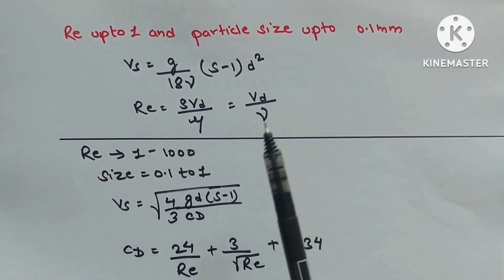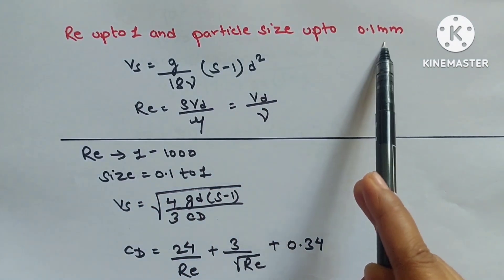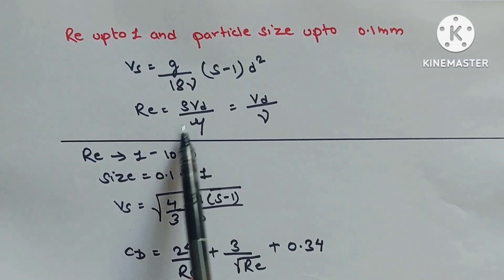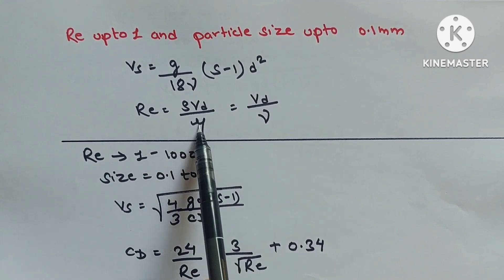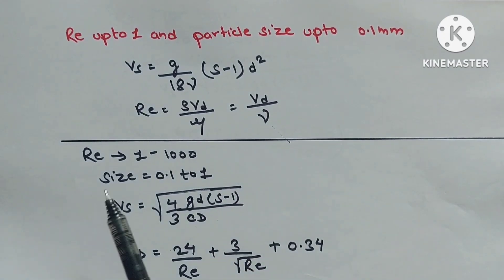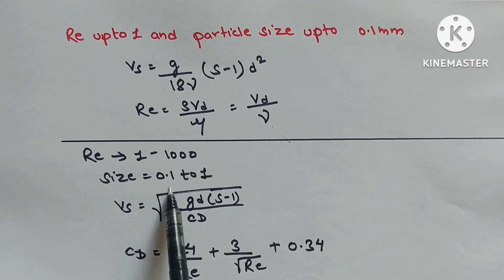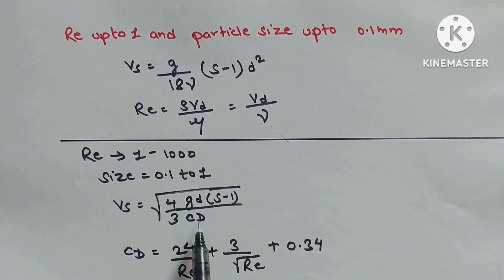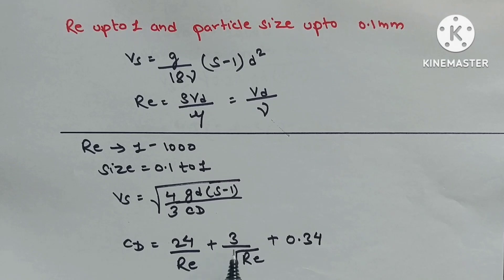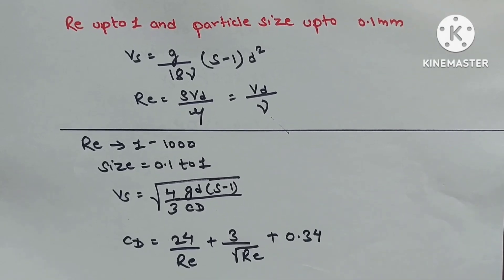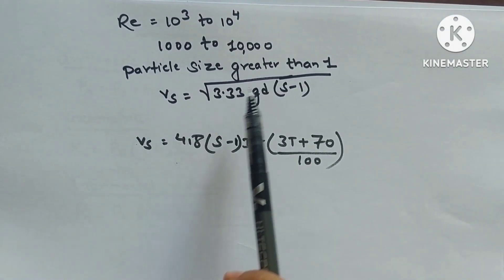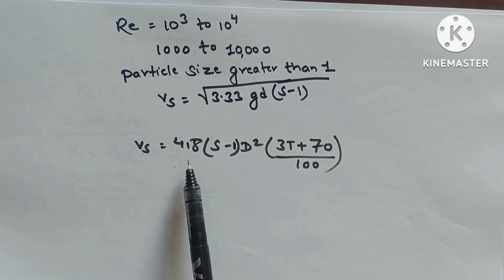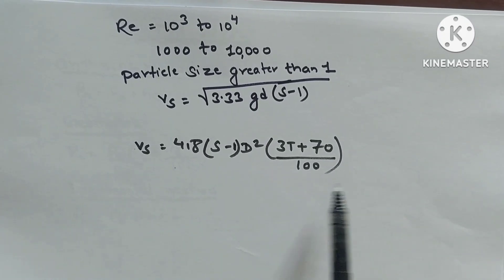Settling velocity formulas: When Re ≤ 1 (particle size ≤ 0.1 mm): Vs = (G/18μ)(S − 1)D². Re = ρVD/μ. When Re = 1–1000 (particle 0.1–1 mm): Vs = √(4GD(S−1)/(3CD)), where CD = 24/Re + 3/√Re + 0.34. When Re = 1000–10,000 (particle > 1 mm): Vs = 3.3√(G(S−1)D), also Vs = (418(S−1)D² × (3T + 70))/100.